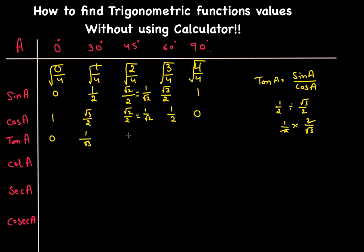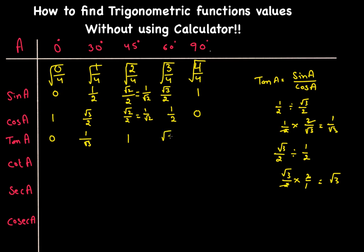For tan(45°): sine and cosine are both √2/2, so dividing gives 1. For tan(60°): (√3/2) divided by (1/2) equals (√3/2) × (2/1) = √3. And tan(90°) is 1/0, which is undefined — we write it as infinity.